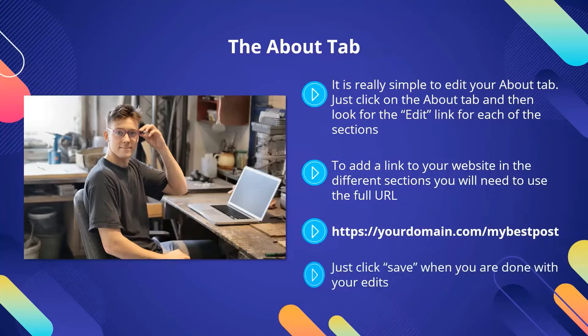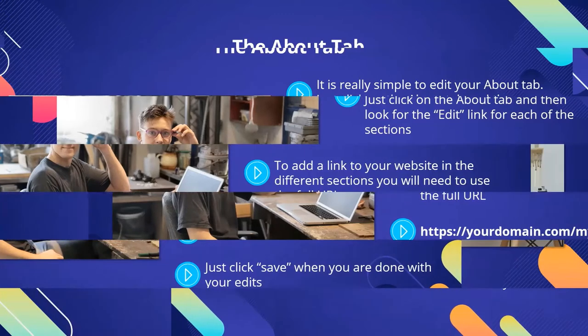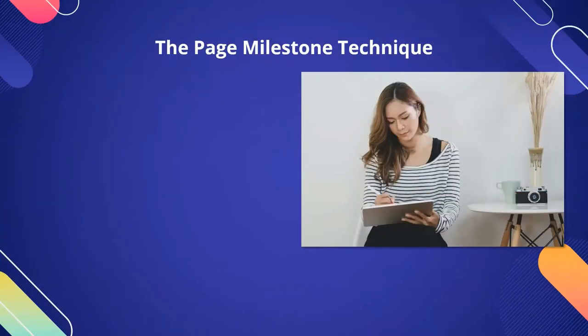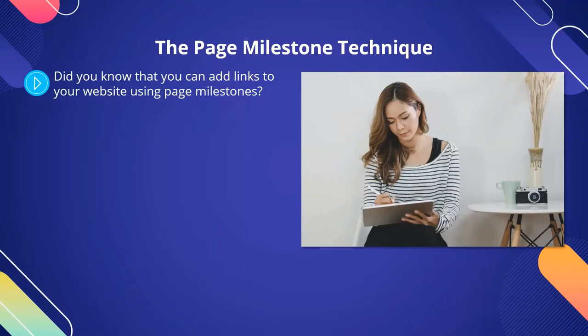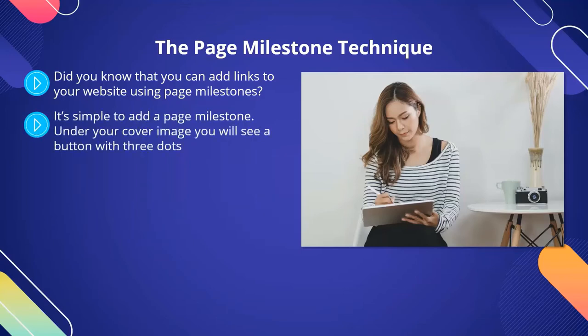Don't just add links to your About tab. Provide valuable information about yourself, your business, and how you can help people. Make this compelling and use your copywriting skills to persuade people to follow you. The Page Milestone Technique. Did you know that you can add links to your website using Page Milestones? A Page Milestone is basically a significant event in the growth of your business. You can and should feature these milestones on your Facebook page. It's simple to add a Page Milestone — under your cover image, you will see a button with three dots. Click on this and a drop-down menu appears. You will see Create Milestone, so click on this.